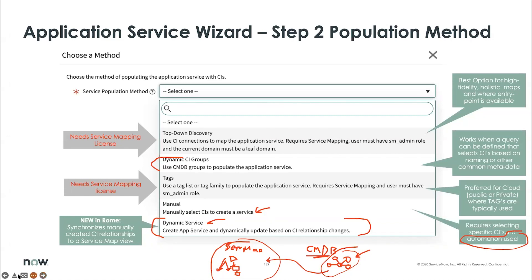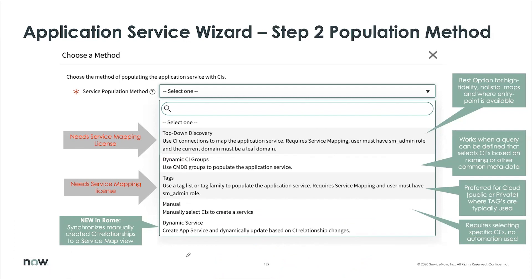I would recommend that dynamic service really should be the way to go, as opposed to manually selecting CI one by one, which is the option ahead of it. That approach is something you should avoid — there's no automation. It's just one, two, three CIs and that's it. Anytime you change anything in the CMDB, you need to come and manually change this, which means it's potentially never used.